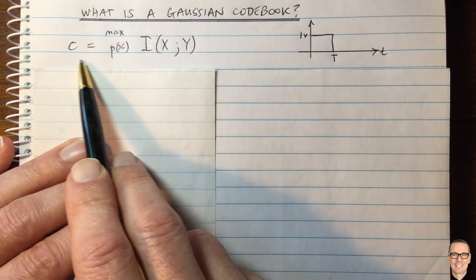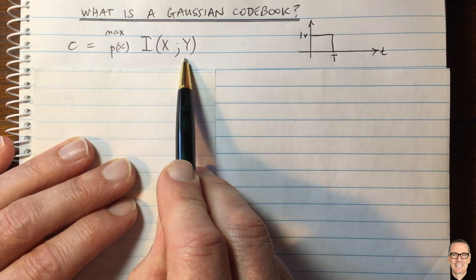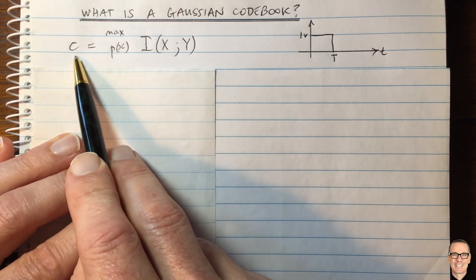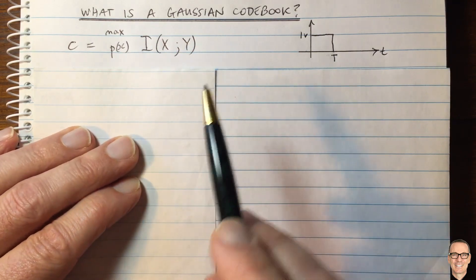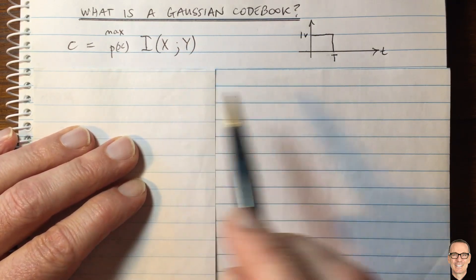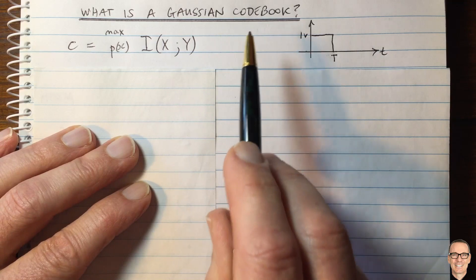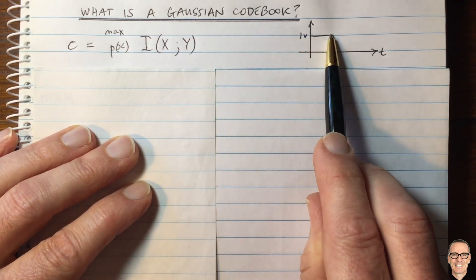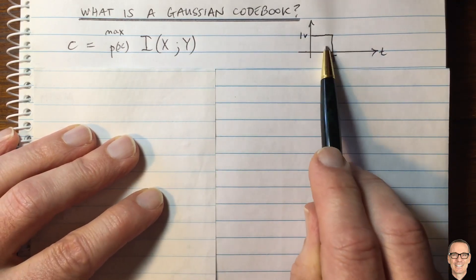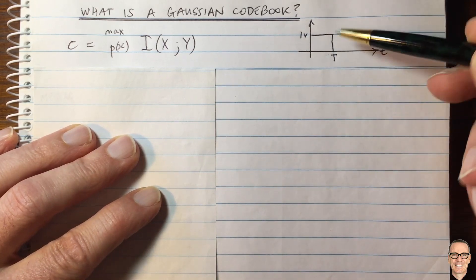Here's the equation for the capacity of the channel, and the capacity is the highest rate. We'll come back to this equation later. But let's start with an example and think about practically what's going on. In order to send information over a channel, you need to send a waveform. We're going to start by considering the binary waveform.